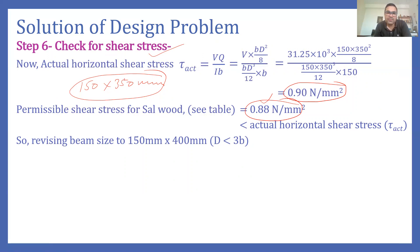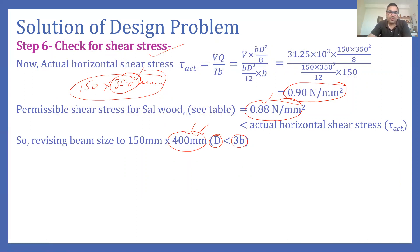The depth is increased to 400 mm. We verify this still satisfies the condition that depth is less than three times the breadth (400 < 3 × 150 = 450 mm), so we can use this increased dimension of 400 mm.